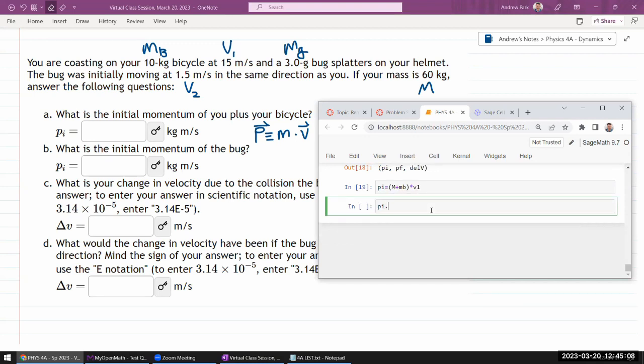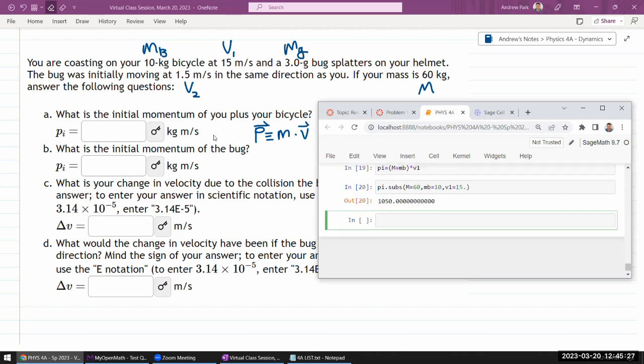So, my numerical value, I can substitute in the values, mass of 60 kilogram, mass of the bicycle of 10 kilogram, and my initial speed of 15 meters per second. And I make sure the units work out here, so it does get 1050 kilogram meter per second. That's my initial momentum.